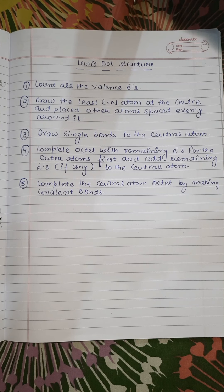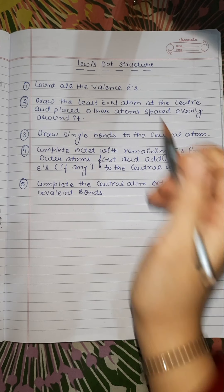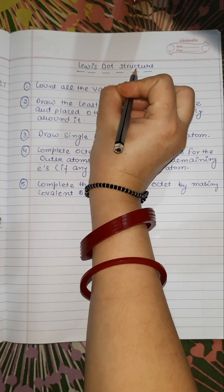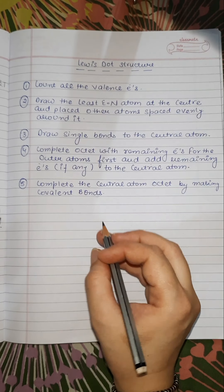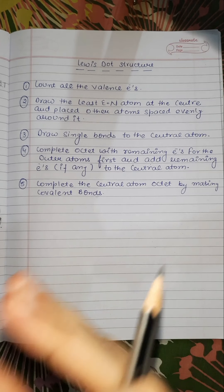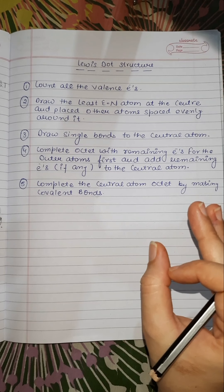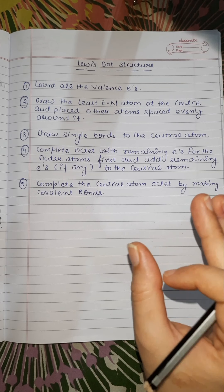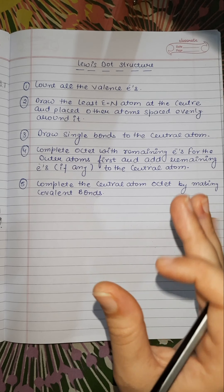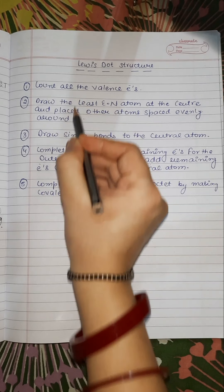Good morning all. Today we are going to discuss a small trick to draw Lewis dot structures. With the help of this trick you can draw any Lewis dot structure. This trick contains 5 steps.